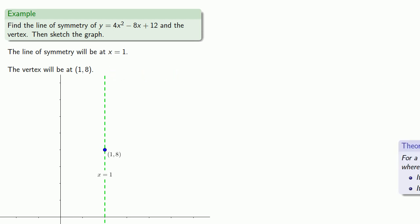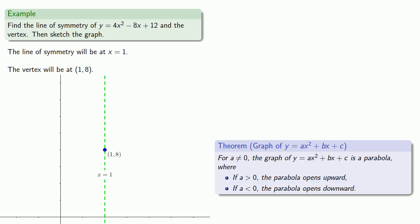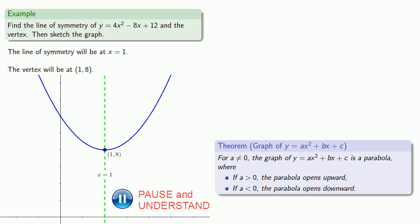Finally, our theorem says that since the coefficient of x squared is greater than zero, our parabola opens upward. We know the line of symmetry and the vertex, so our parabola must look something like this.